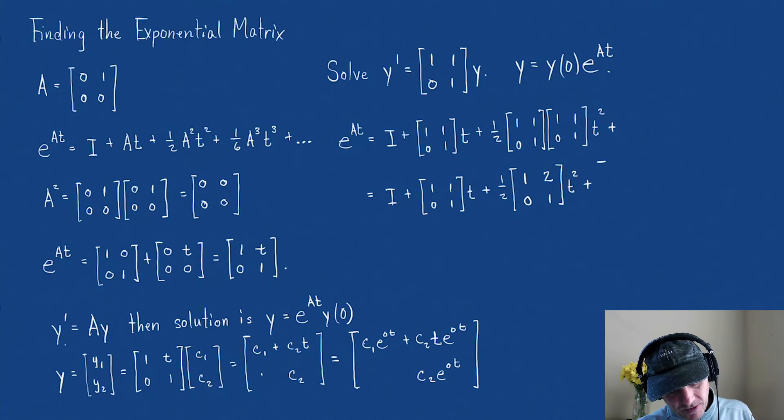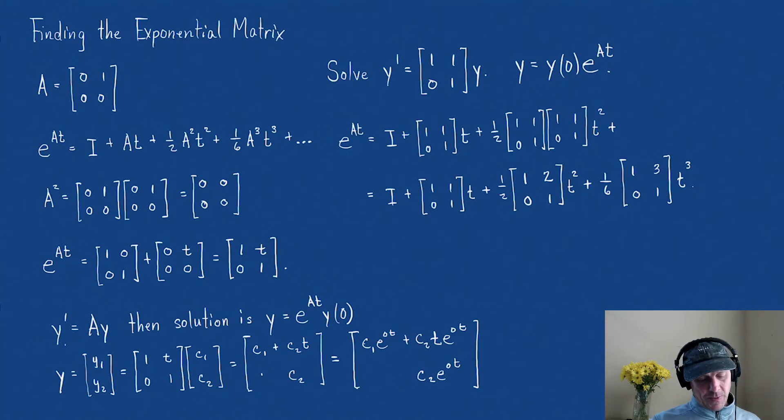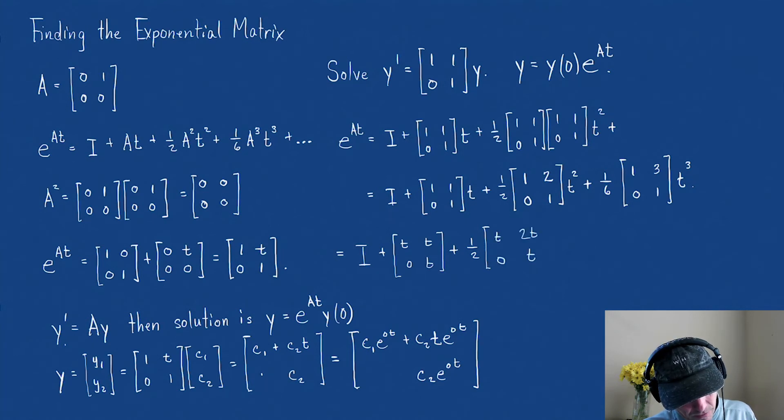And what's going to happen is this next one is going to become 1 over 3 factorial, which is 1/6, times [[1,3],[0,1]] times t³.